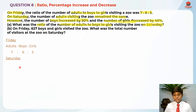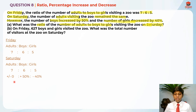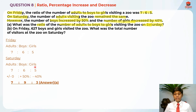For Saturday: adults is to boys is to girls. Adults remain the same so it's plus or minus zero, boys plus 50%, and girls minus 40%. Adding them up: adults is 7, six plus 50% is 9, and five minus 40% is 3. So the answer for part A is 7 is to 9 is to 3.